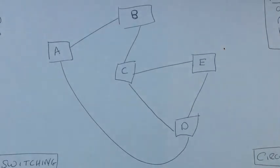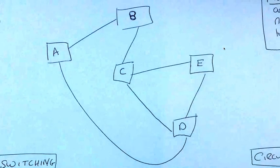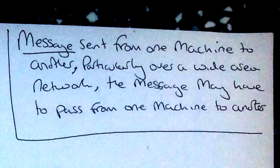Okay, so if we have a quick look, what we've got here is a diagram and this represents a network. If we have a quick look at what's written up here, a message sent from one machine to another, particularly over a wide area network. This message may have to pass from one machine to another.